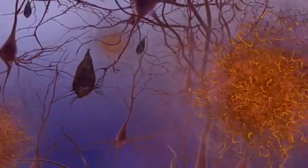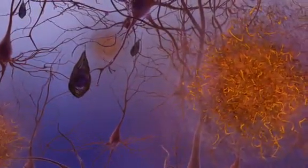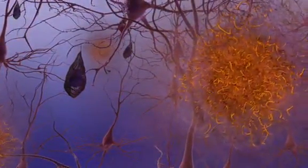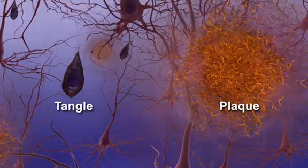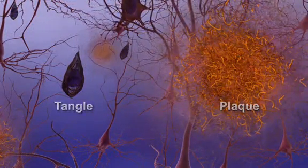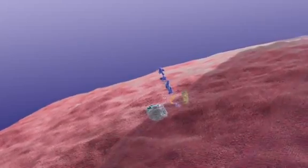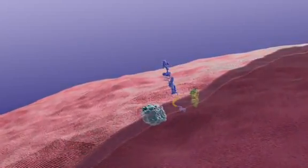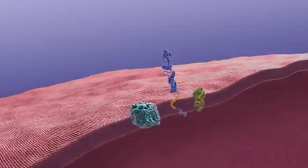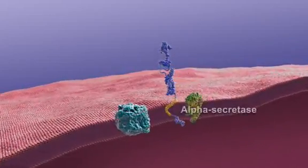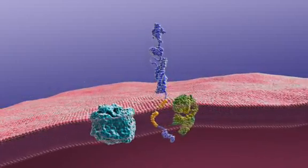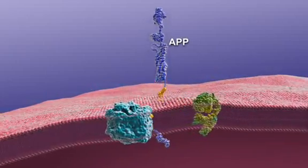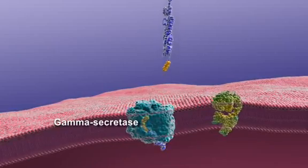Abnormal structures called beta amyloid plaques and neurofibrillary tangles are classic biological hallmarks of the disease. Plaques form when specific proteins in the neuron's cell membrane are processed differently. Normally, an enzyme called alpha-secretase snips amyloid precursor protein, or APP, releasing a fragment. A second enzyme, gamma-secretase, also snips APP in another place.